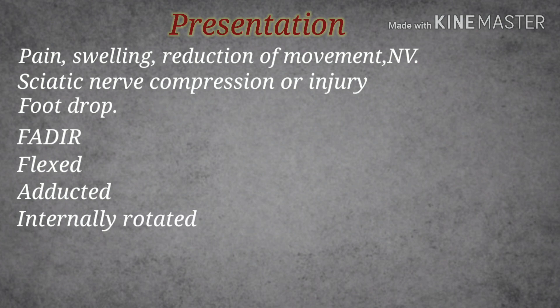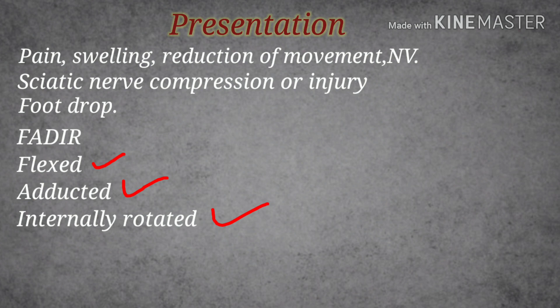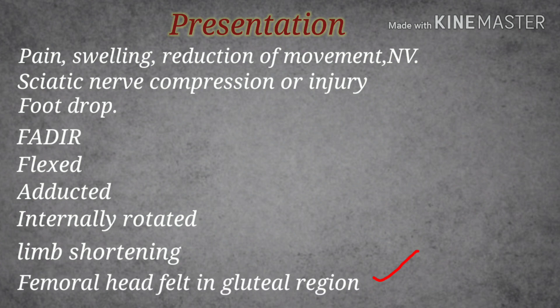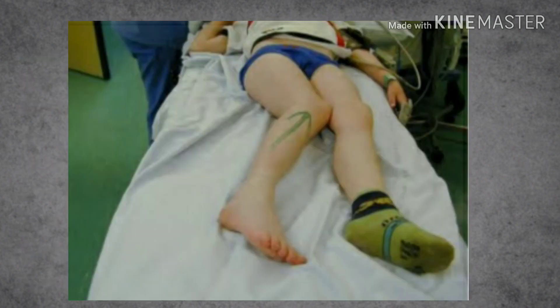The typical presentation of posterior hip dislocation — remembered as FAI — is that the leg is flexed, adducted, and internally rotated. The head of the femur can be felt in the gluteal region, and limb shortening occurs. In the clinical image shown, the leg is internally rotated, flexed, and adducted, which is the classic sign of posterior hip dislocation.